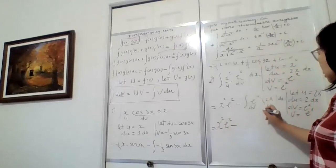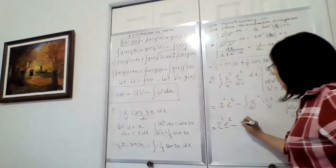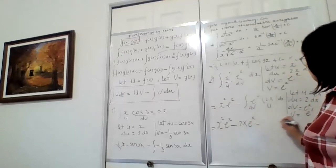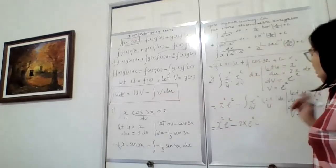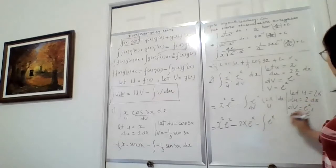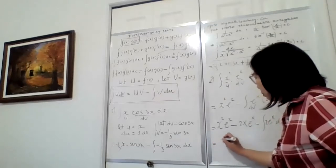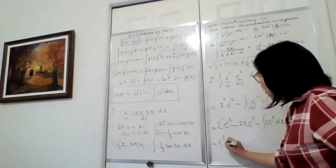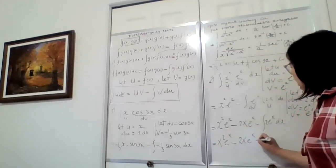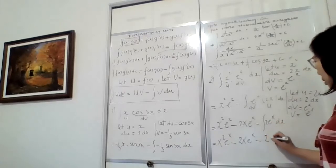So now our answer will include x²eˣ minus the result of applying the formula again with u=2x and v=eˣ. Using the formula: u·v minus ∫v·du gives us 2x·eˣ minus ∫eˣ·2dx. We have to do this one more time. That gives x²eˣ minus 2x·eˣ minus 2eˣ.